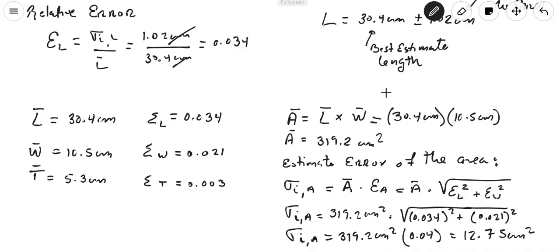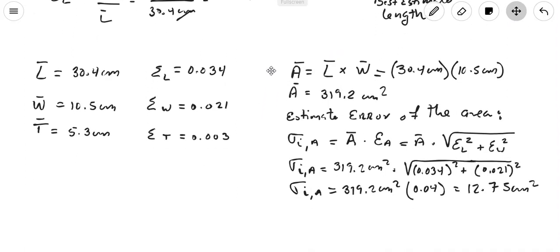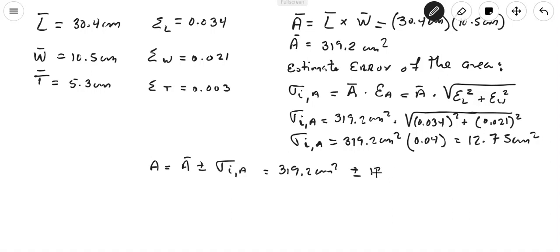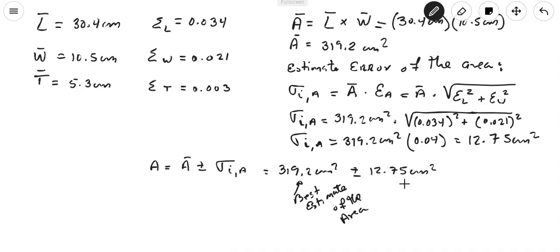We can now express the area as: Area = 319.2 cm² ± 12.75 cm², where 319.2 cm² is the best estimate of the area and 12.75 cm² is the estimated error. This is error propagation — we propagate the errors from length and width to find the error in the area.